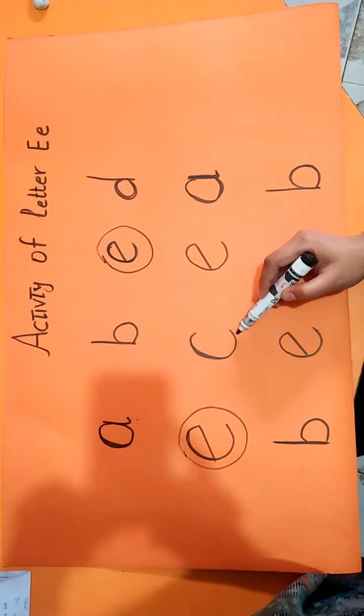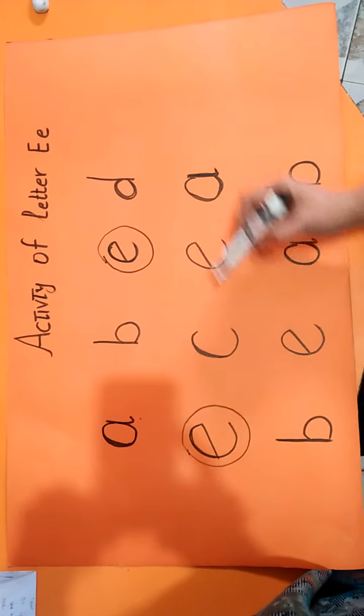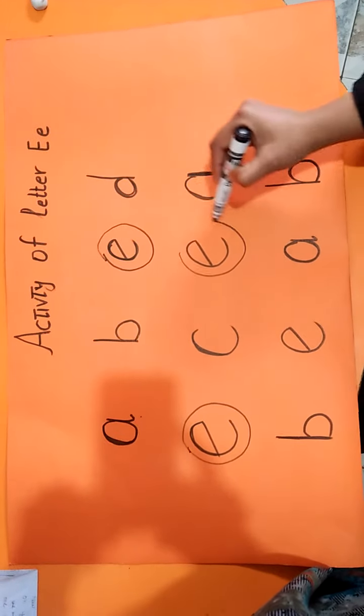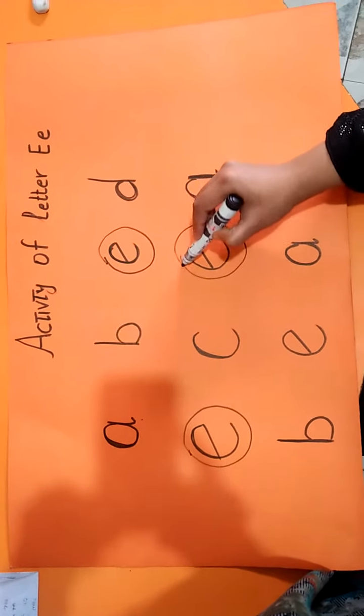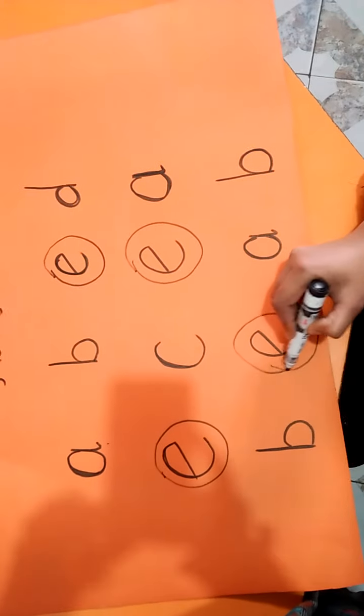This is not E, so we will not circle. We will circle the E. This is another E. We will circle the E.